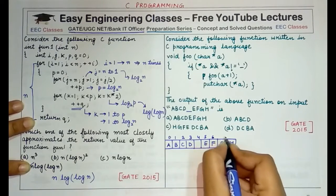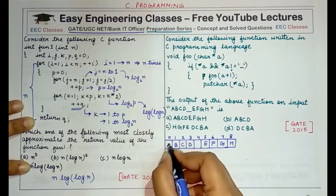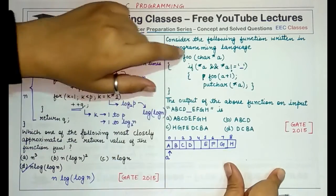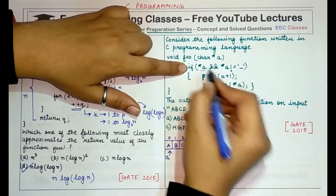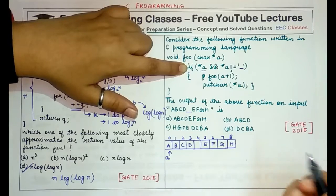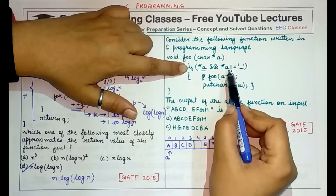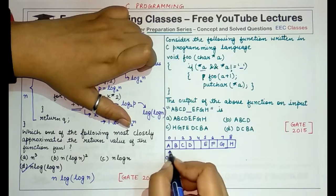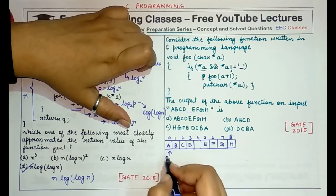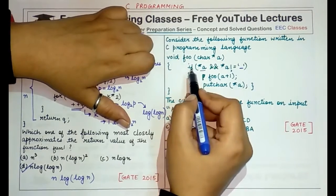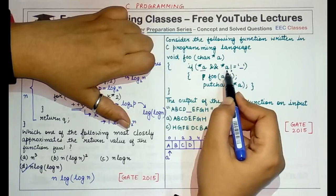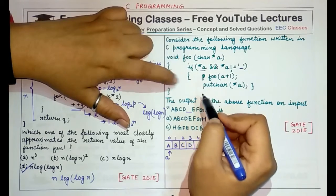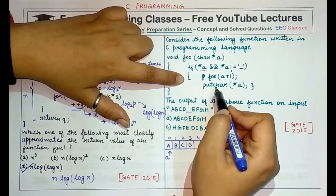The array indices are 0 through 8, and initially pointer a points to location 0 (the character 'a'). The first time foo is called, it checks if *a is non-null (the input array is not empty) and if *a is not equal to space. If it is a space, the if condition becomes false; otherwise we enter the if block and call foo recursively with a+1, then putchar(*a).